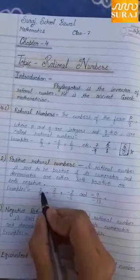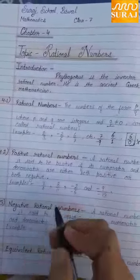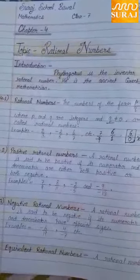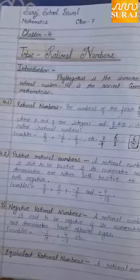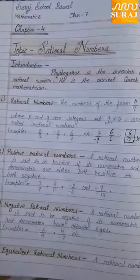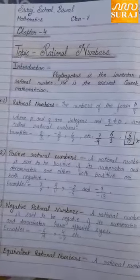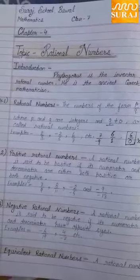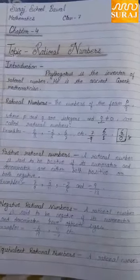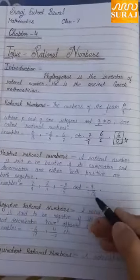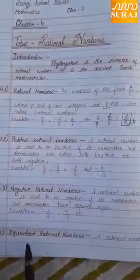For example, 7 upon 9 — here 7 and 9 dono positive integers hain. 8 upon 11 is also positive. Minus 2 upon minus 5 — minus 2 and minus 5 are both negative integers. And minus 9 upon minus 13 is also a positive rational number.